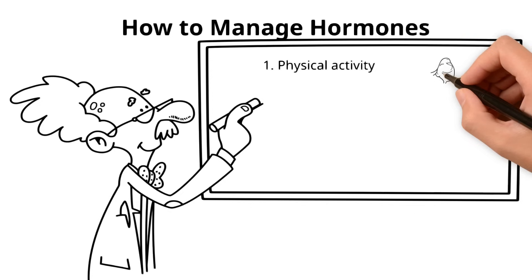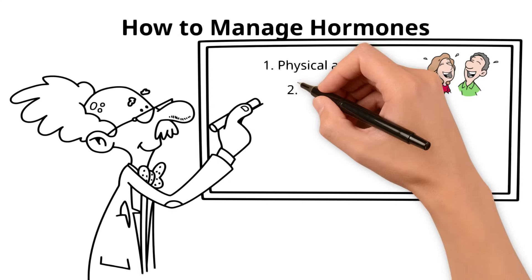How to manage hormones. Here are some simple ways to balance your hormones. 1. Physical activity helps reduce stress levels and boosts dopamine.